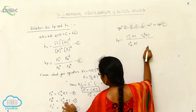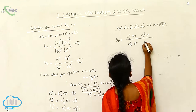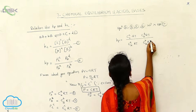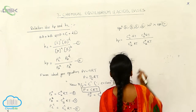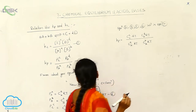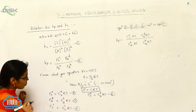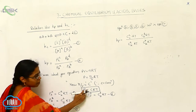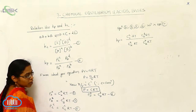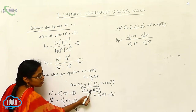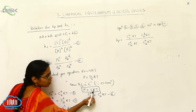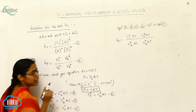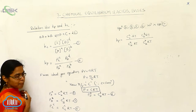Now in the place of PB, what we can write here is C, B, V, R, T. So now it is P is equal to C·R·T, where C is the concentration, R is the gas constant, and T is the temperature.